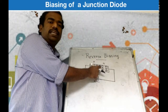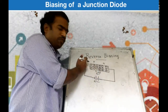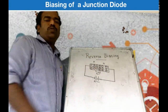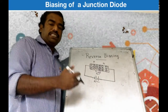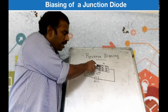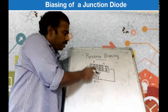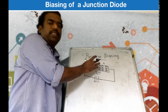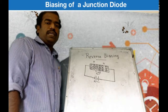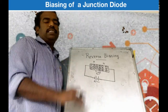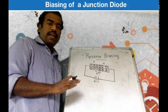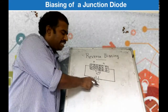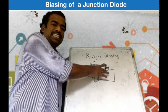The depletion region widens as holes move left and electrons move right. More and more ions will be created near the junction, which means the depletion region width increases. If you increase the reverse voltage, the width of the depletion region will increase further.